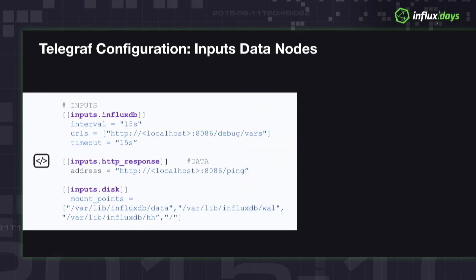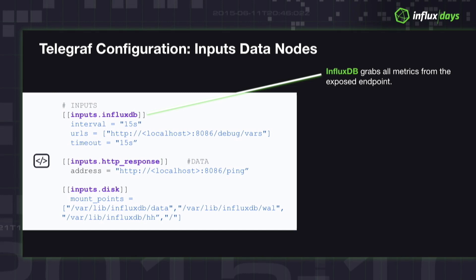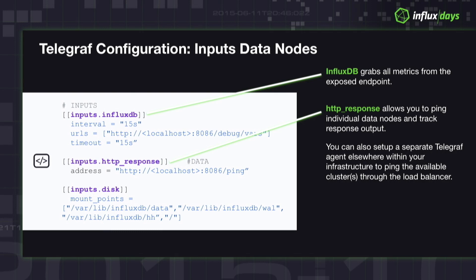On the data node side — for enterprise or open source — the data node configuration is pointed at the URL for the data node, or the load balancer in the case of InfluxDB Enterprise. We use the debug vars endpoint available on the database to grab all the stats. This effectively replaces underscore internal. Everything gathered through underscore internal is now output through the debug vars endpoint and can be landed in whatever target you're sending it to. The only difference is that measurement names have 'influxdb' prepended to them.